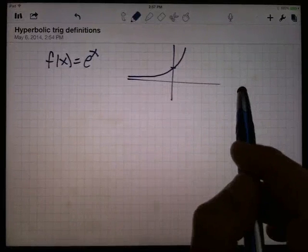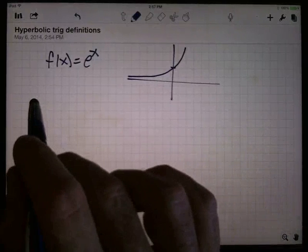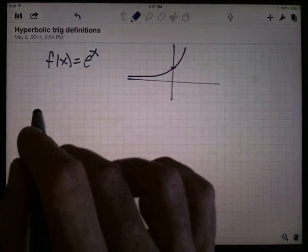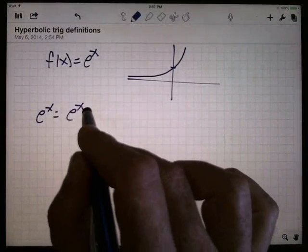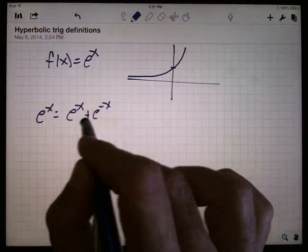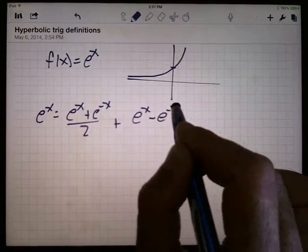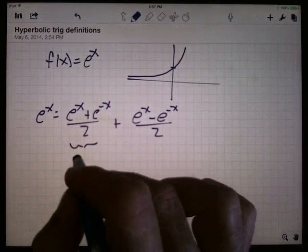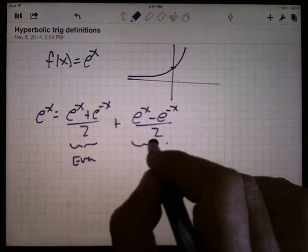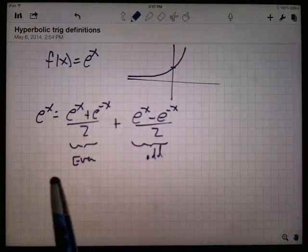It is, however, defined for the whole real line. So using the theorem that we had in the previous video, I can rewrite e to the x as e to the x plus e to the minus x over 2, plus e to the x minus e to the minus x over 2. That is, I have right here an even function and an odd function, and the sum is equal to e to the x.